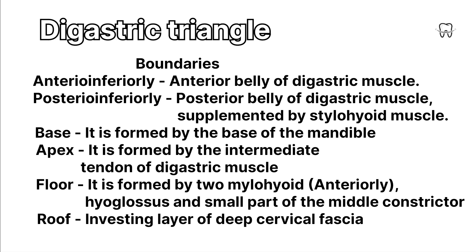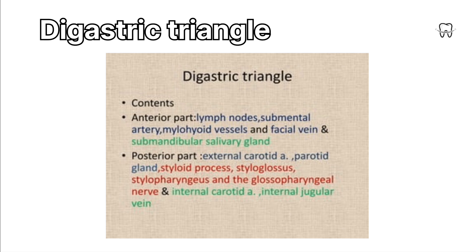The floor is formed by mylohyoid anteriorly, and hyoglossus and a small part of the middle constrictor posteriorly. The roof is formed by the investing layer of the deep cervical fascia. The triangle has contents in its anterior and posterior parts.